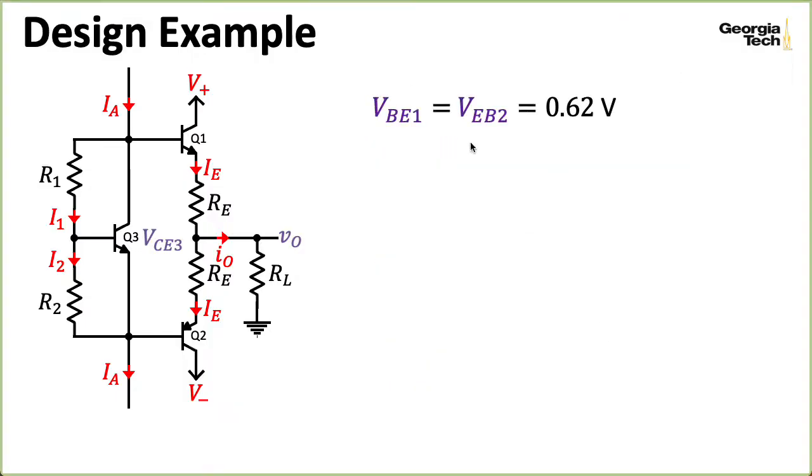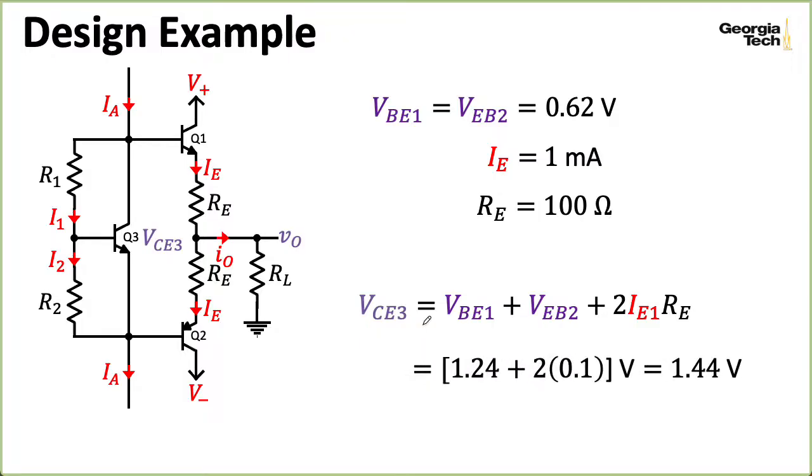For instance, suppose VBE1 and VEB2 are assumed to be 620 millivolts, and we would like a bias current of 1 milliamp for the emitter current. And suppose we've chosen RE to be 100 ohms. Maybe we chose that because we know our load resistance is something like 1 kiloohm, and we would like RE to be at most 10% of that to avoid getting too much voltage loss. So if we plug all of these quantities into that formula for VCE3 we saw on the previous slide, we wind up with 1.44 volts. And what we will do is we would choose R1 and R2 in order to try to get that 1.44 volts.